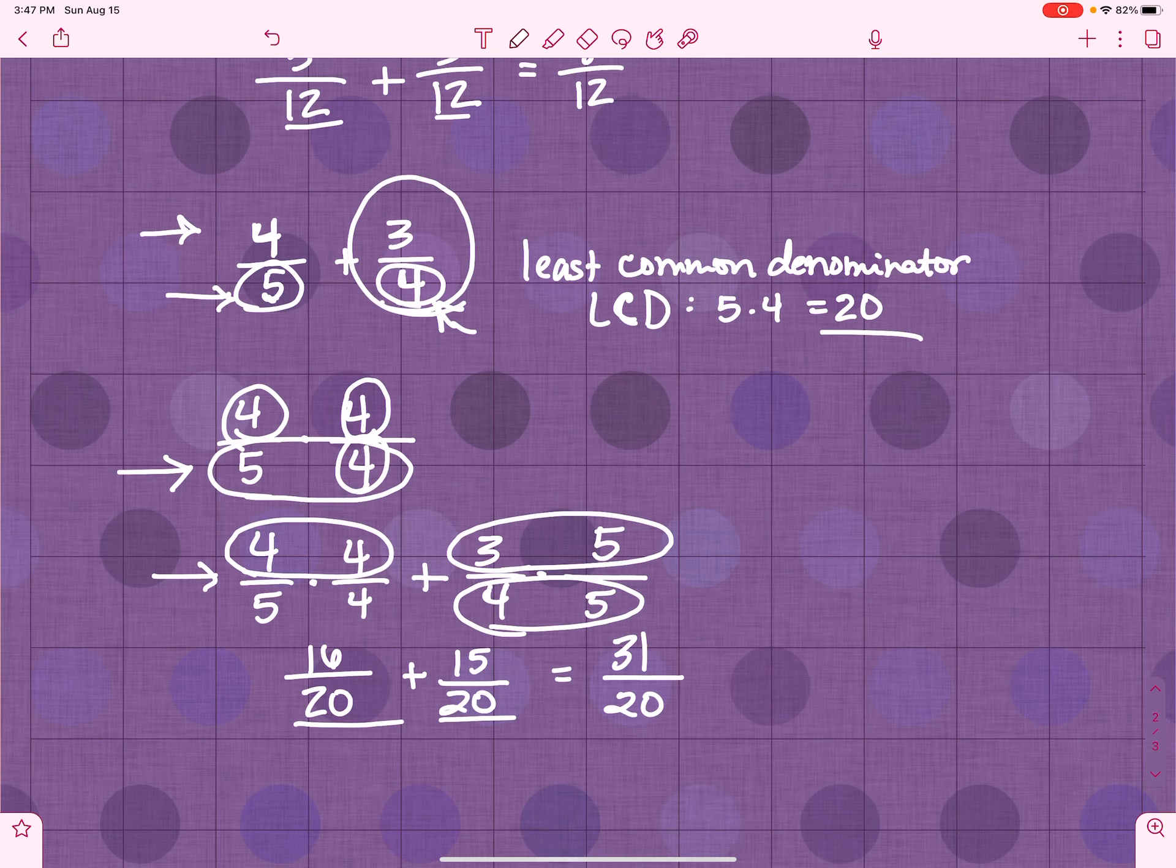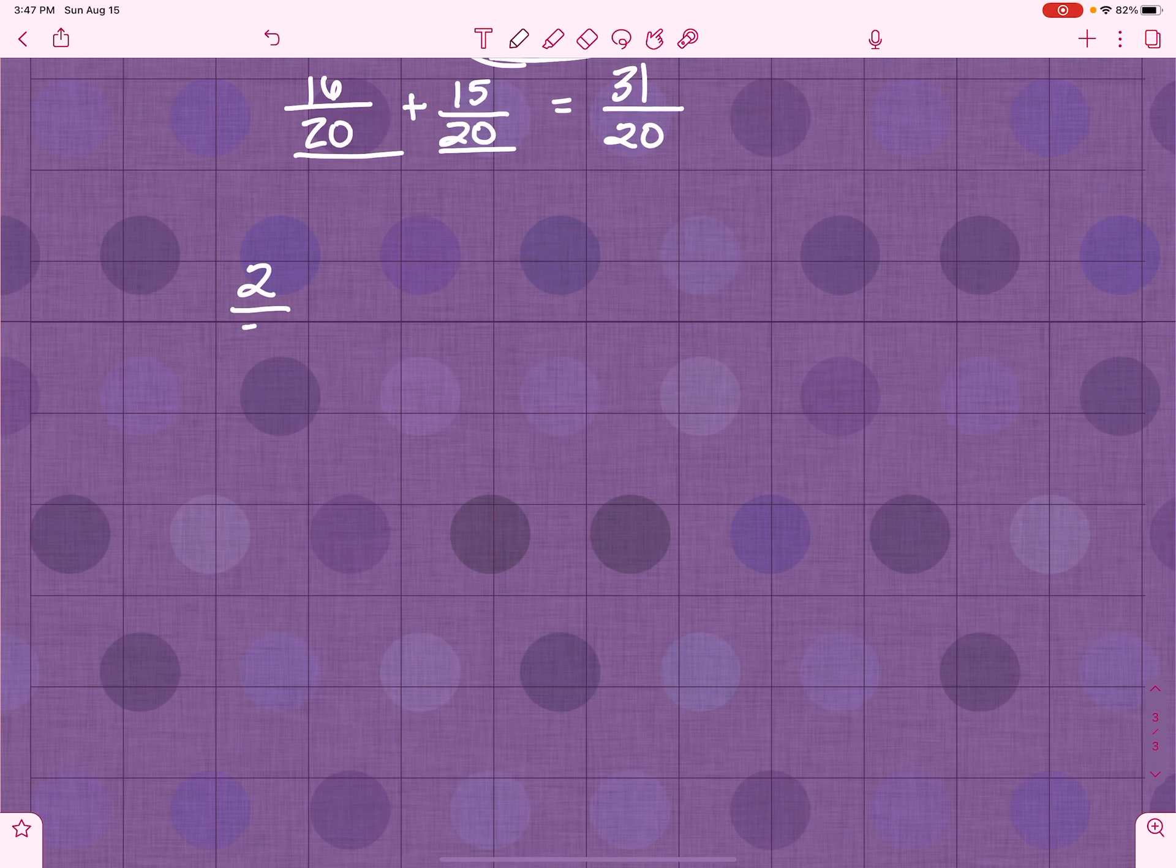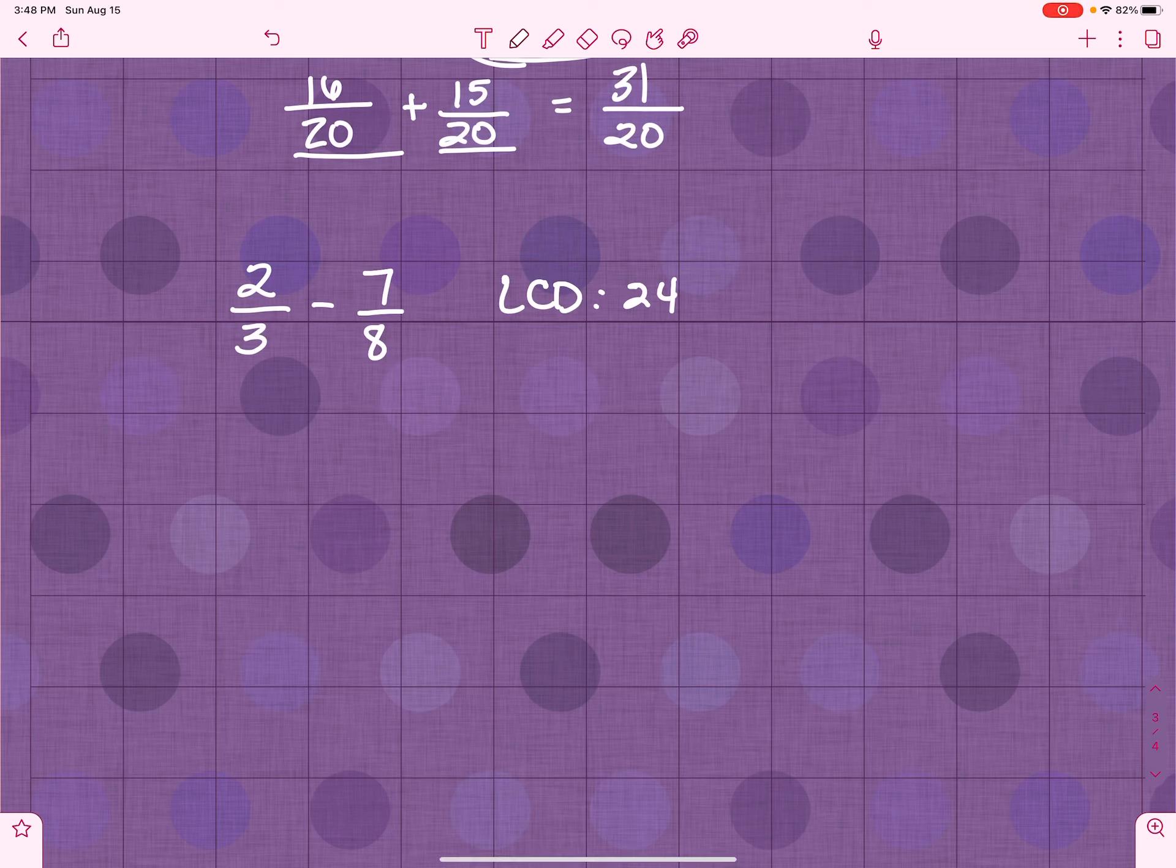Works the same way with subtraction. Let's say I had 2 3rds minus 7 8ths. So, I need an LCD. It has to consist of a 3 and an 8. So, 3 times 8 is 24. That's the smallest number that they will both go into.